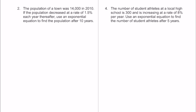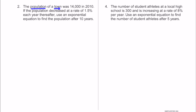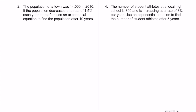Here's number two. For number two, the population of a town was 14,000 in the year 2010. If the population decreased at a rate of 1.5% each year thereafter, we need to use an exponential equation to find the population after 10 years. The original population was 14,000 people in 2010, and the time span is 10 years.